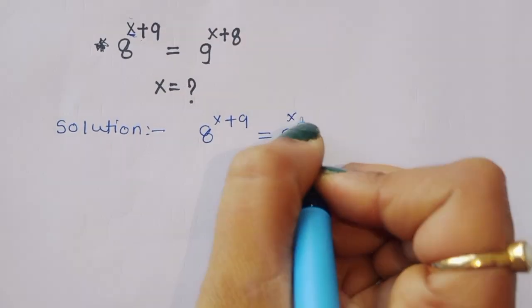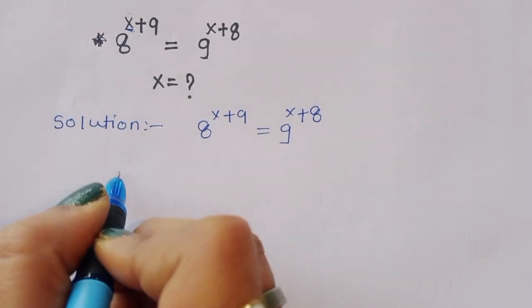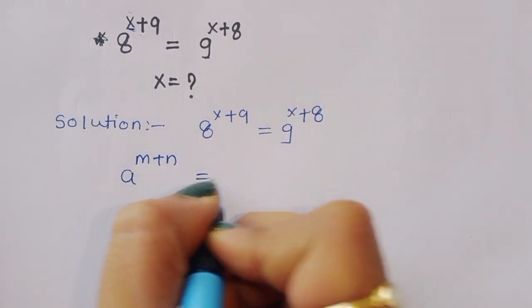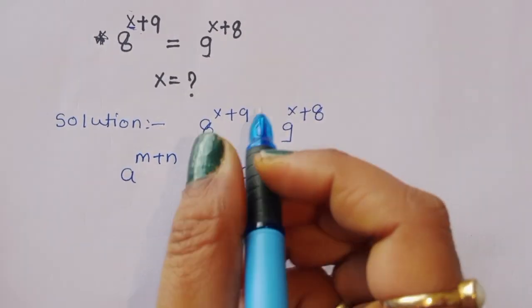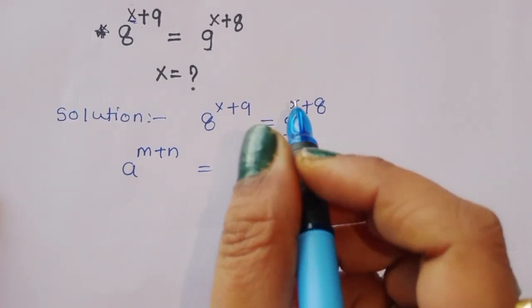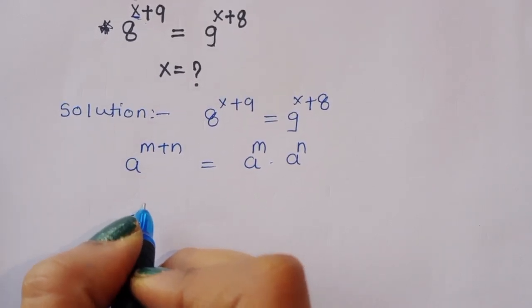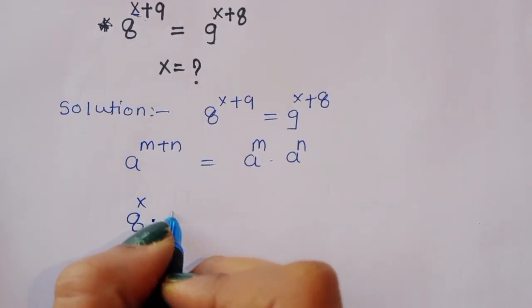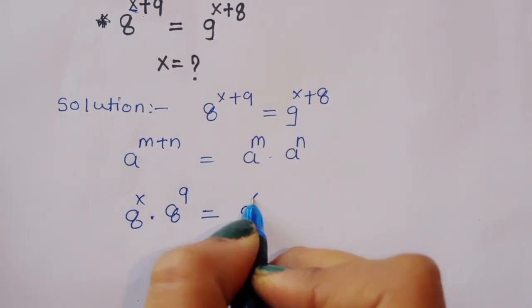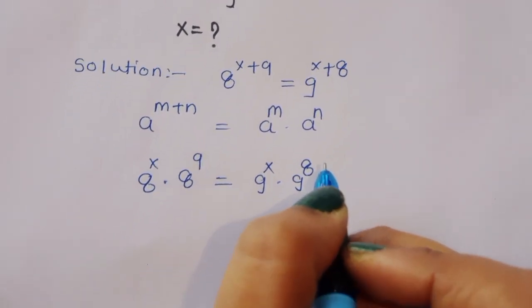We know the formula a power (m+n) is equal to a power m times a power n. By using this formula, we can write 8 power x times 8 power 9 is equal to 9 power x times 9 power 8.